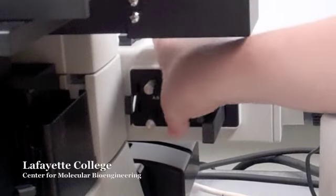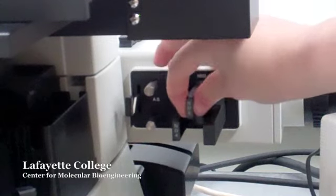Additional neutral density filters can also be found to the right of the microscope. Slide these filters inward to decrease the light intensity.